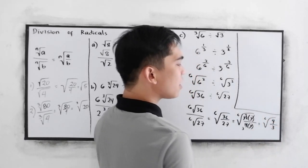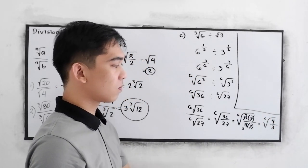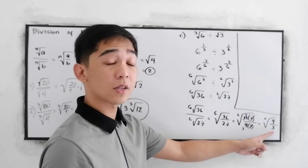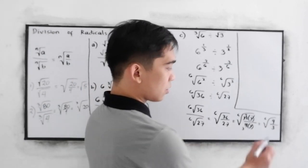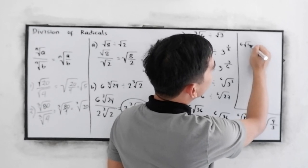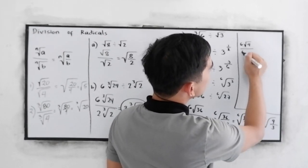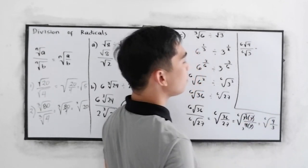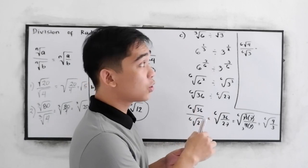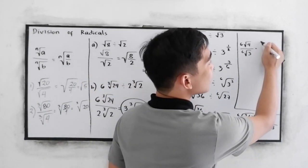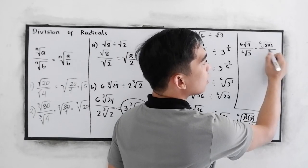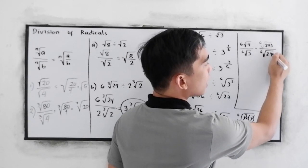Now, in simplifying radicals, no radical should be in the denominator. We have 6 root of 4 over 6 root of 3. We need to multiply by 6 root of 243 over 6 root of 243.